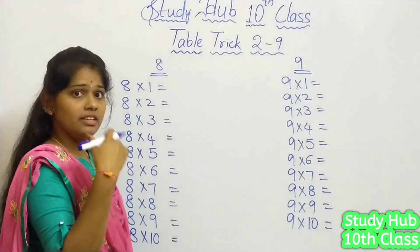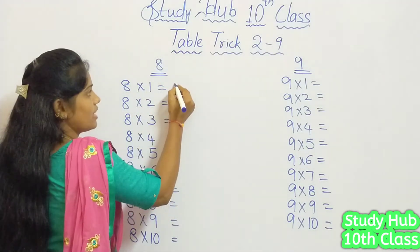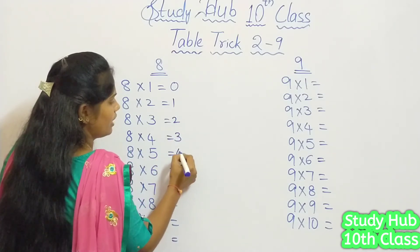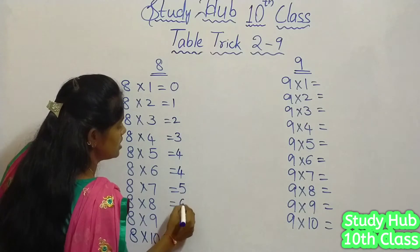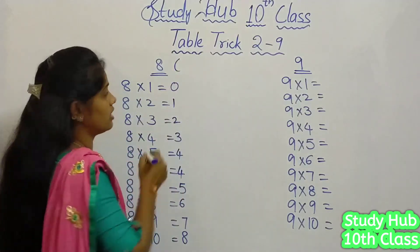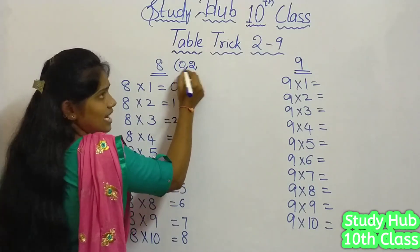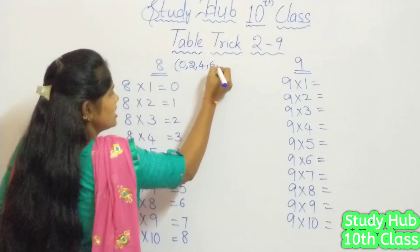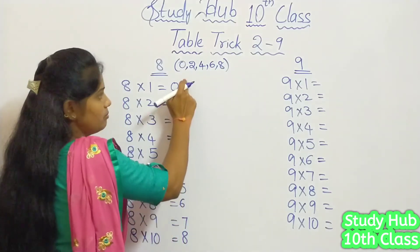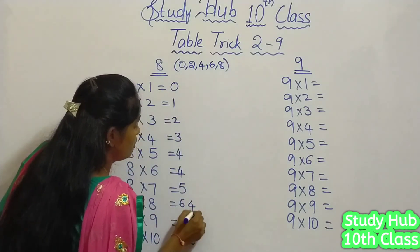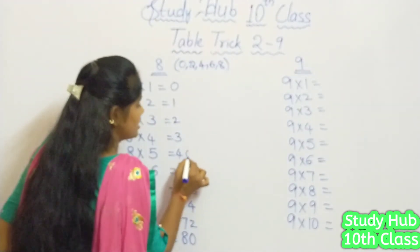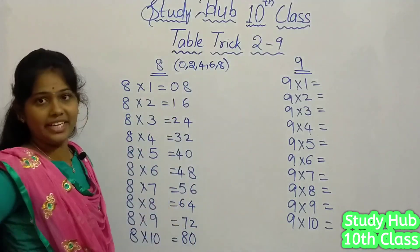Writing the 8 and 9 times tables is even simpler. For the 8 times table, first write the digits 0, 1, 2, 3, 4, 4, 5, 6, 7, 8 — note that 4 is written twice. Then for the ones place, follow a series of even digits in increasing order from bottom to top: 0, 2, 4, 6, 8, repeating the series again: 0, 2, 4, 6, 8. This gives us the complete 8 times table.